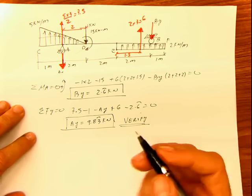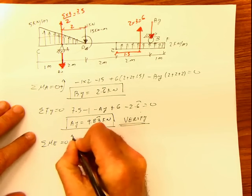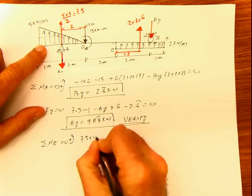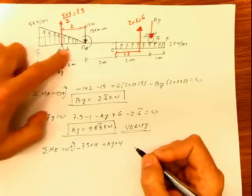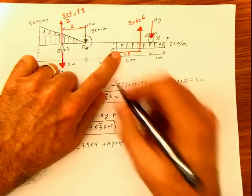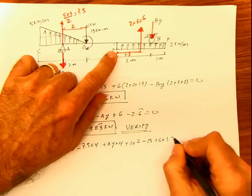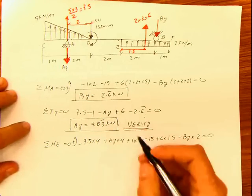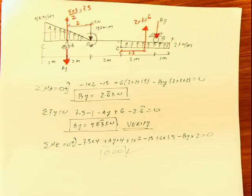How do we verify the reactions? We can do summation of moments at a point that doesn't eliminate anything, for example at E. Summation of moments at E equals 0: negative 7.5 times 4, plus Ay times 4, plus 1 times 2, minus 15, plus 6 times 1.5, minus By times 2 equals 0. Substituting Ay and By gives 0 equals 0. So our reactions are correct, and we can start our process.